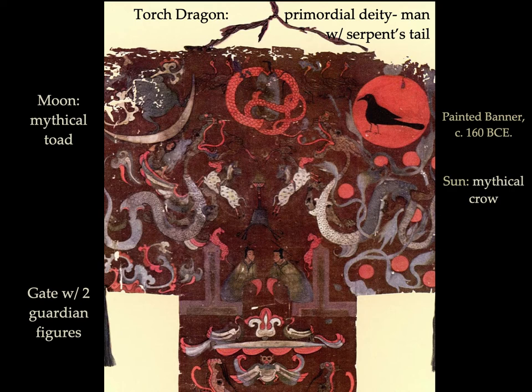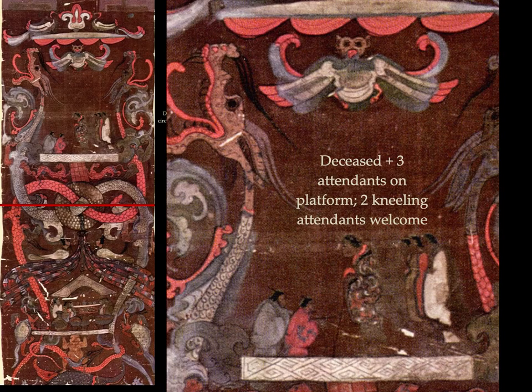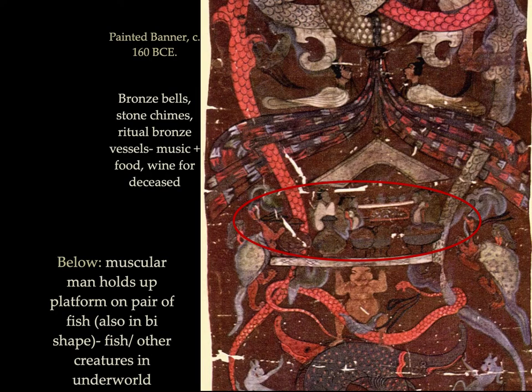The torch dragon, which is the primordial deity, is represented as a man with a serpent's tail. Not just anyone can make it to heaven — they must pass through the gates of protection. The deceased is accompanied by three kneeling attendants who welcome them into heaven. Several of the objects seen here, like the bronze bells, ritual vessels, food, and wine, were often found in burials as part of ritual offerings.